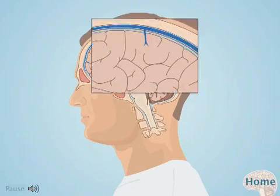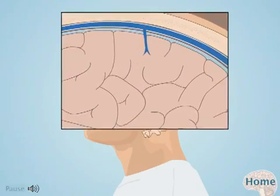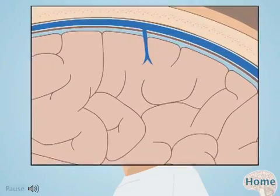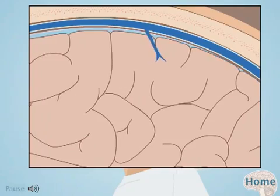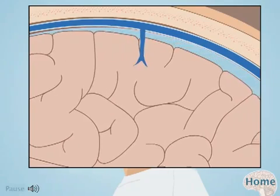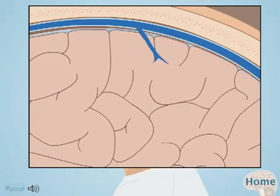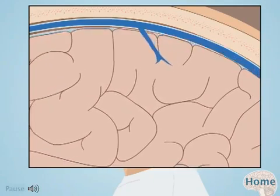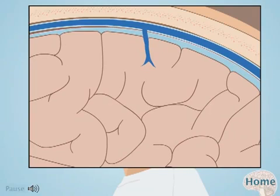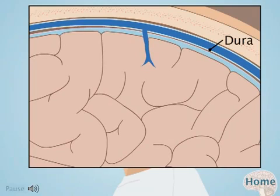Movement of the brain stretches the blood vessels that connect the surface of the brain to the dura, the sheet of tissue between the brain and the skull. These blood vessels are known as bridging veins.